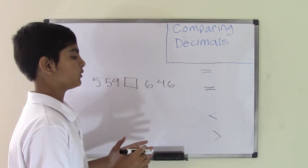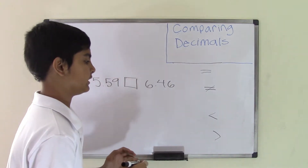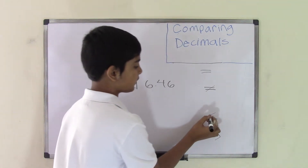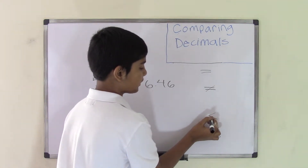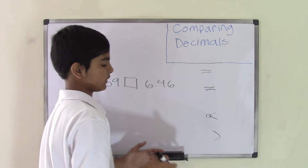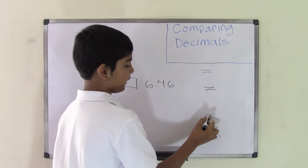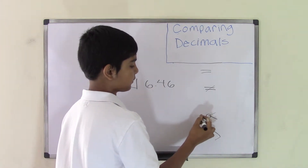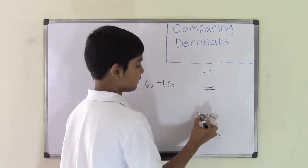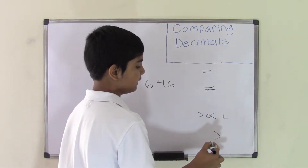One way to remember this is: wherever the arrowhead points towards is the smallest number. So if the arrowhead is pointing towards one side, then the smallest number will be on that side, and the larger number will be on the other side.